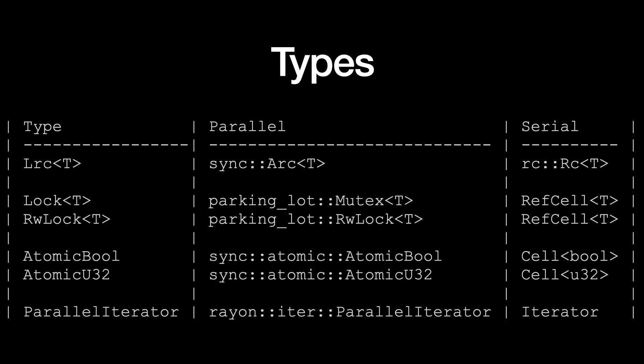The same internal crate also defines several types that support parallel execution, each with two implementations. The parallel version provides synchronization; the serial version does not. For example, we have a reference-counting type called LRC — in the parallel front end it's a wrapper around Arc, and in the serial front end it falls back to a wrapper around Rc. We also have locking types: in the parallel front end they are wrappers around Mutex and RwLock; in the serial front end they fall back to RefCell. There is a similar story for atomic types and iterators. Finally, in the parallel front end we also split some global hash tables into multiple shards to reduce mutex contention.